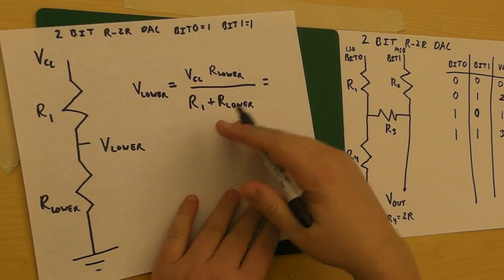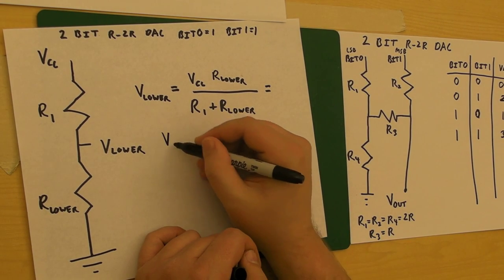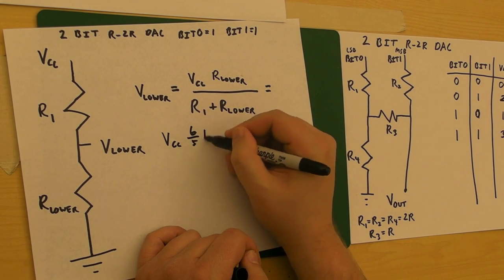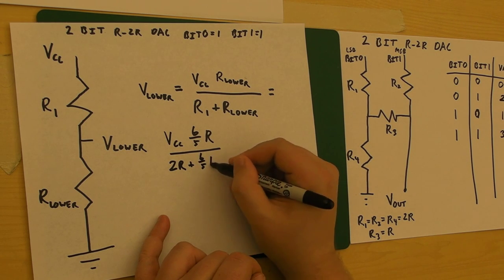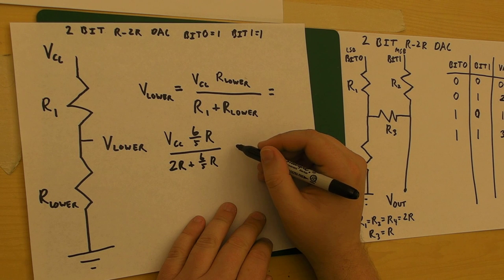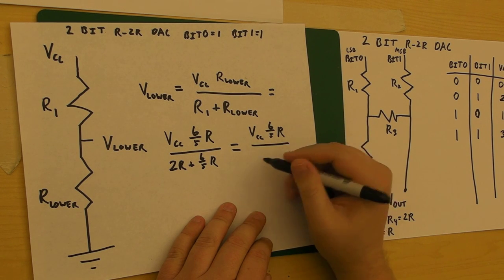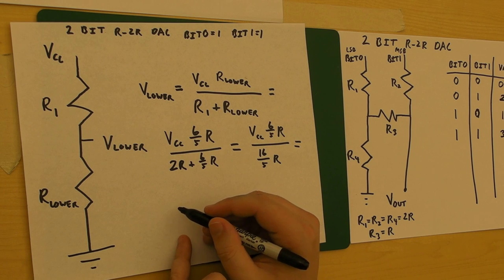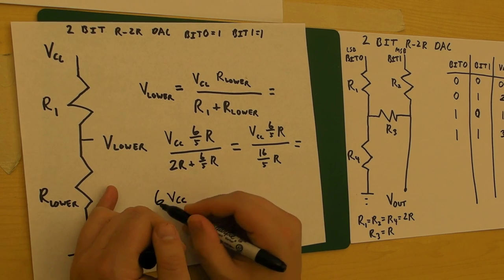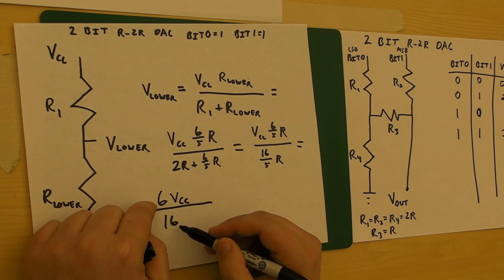Which, let's see here, R lower we figured out was 6 fifths R. So VCC times 6 fifths R, R1 is 2R, and R lower again is 6 fifths R. So doing this quickly in my head, I got VCC 6 fifths R over 16 fifths R, which is equivalent to VCC times 6 over 16. So we have V lower equals 3 eighths VCC.